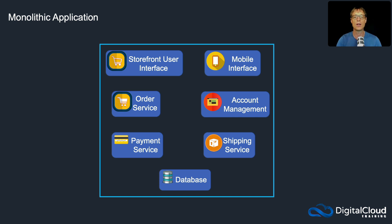So in our monolithic application, let's say that this is our application inside the blue box. This could be running on one server or multiple servers, but it has multiple components. It's got, for instance, the storefront user interface — that could be some kind of web service that your users can interact with and place orders. It then has a mobile interface for users accessing your website from mobile clients. It's also got an order service, which processes when users add something to their cart and purchase it.